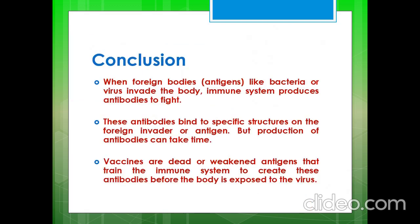We can conclude that when foreign bodies or antigens like bacteria or virus invade the body, the immune system produces antibodies to fight. These antibodies bind to specific structures on the foreign invader, but production of antibodies can take several days. Vaccines are dead or weakened antigens that train the immune system to create these antibodies before the body is exposed to the virus.